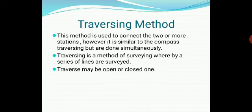The traversing method is used to connect two or more stations and is similar to compass traversing. Traversing is a method where a series of lines are surveyed. Traverses are of two types: a closed traverse, where the starting and ending points coincide, and an open traverse, where the first and last end points are not connected.